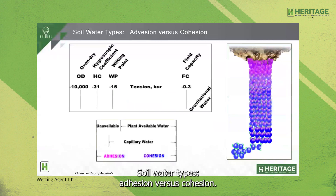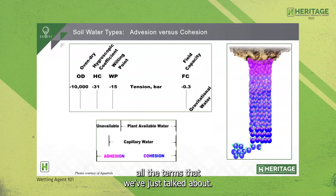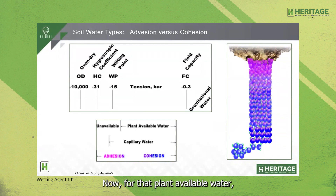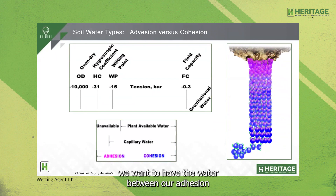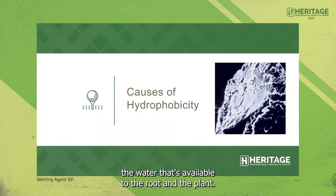Soil water types — adhesion versus cohesion. Looking at the chart from oven dried to gravitational water and field capacity, for plant available water, we want the water between our adhesion and our cohesion. That is our capillary water — the water available to the root and the plant.